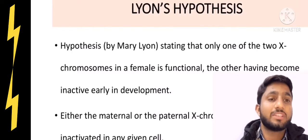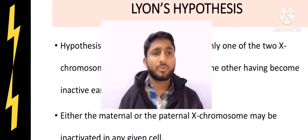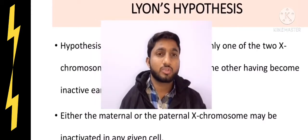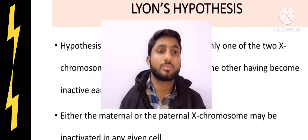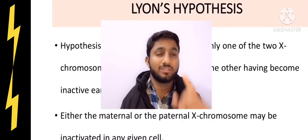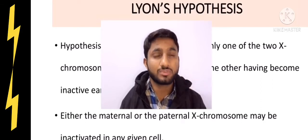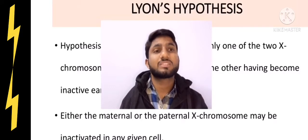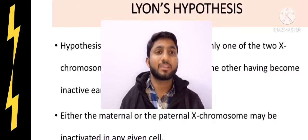The hypothesis suggests or states that only one of the two X chromosomes in a female is functional, the other one having become inactive early in development. In Lyon's hypothesis, we have two X chromosomes which we call sex chromosomes. In the case of females, only one remains active, the other X chromosome becomes inactive.